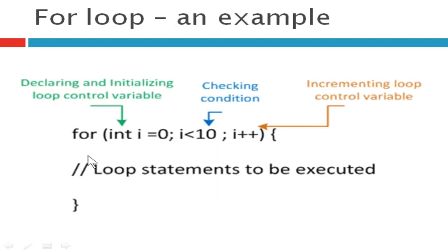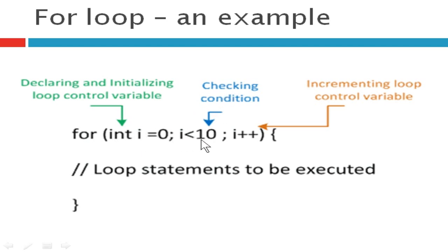We will see a program example. You can see the for loop: the for keyword and open parenthesis. The first part is the declaration and initialization statement — this will be the initial value. Then the second part is the condition. And the third part is the increment or decrement value. Then you will have the body of the loop. This is how the format of a for loop looks.